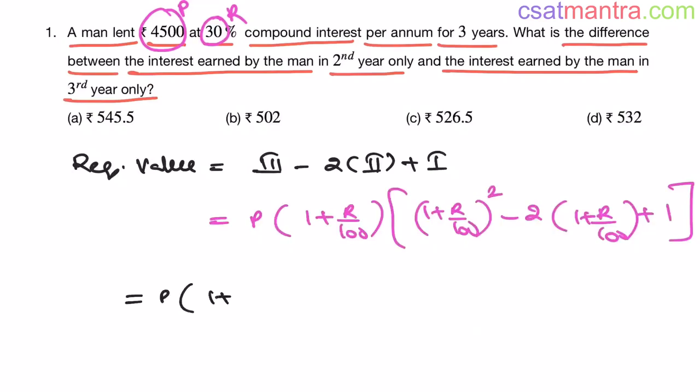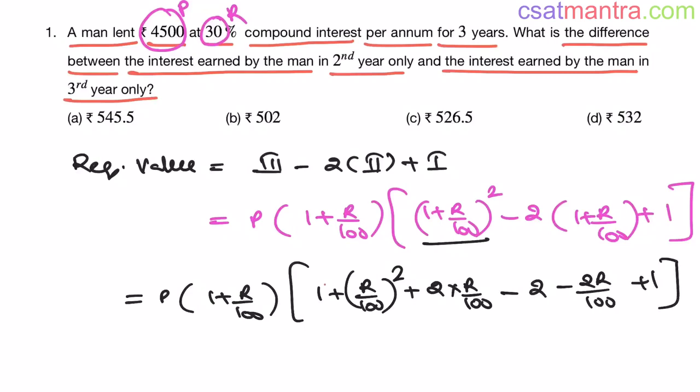We have 1 plus R by 100 whole square minus 2 into 1 plus R by 100 plus 1. Now, P into 1 plus R by 100. A plus B whole square formula, my friends. A square plus B square plus 2AB. That is 2 into R by 100 minus 2 minus 2R by 100 plus 1. Now, see 1 plus 1, 2. Minus 2, they got cancelled. 2R by 100, 2R by 100, they got cancelled.